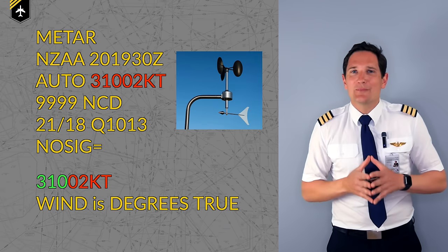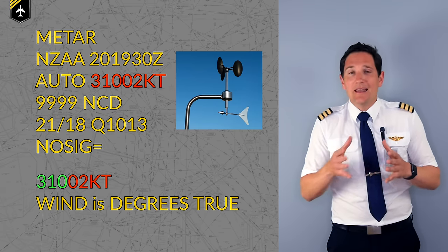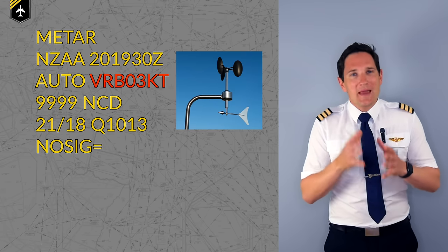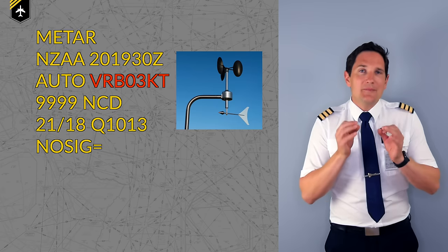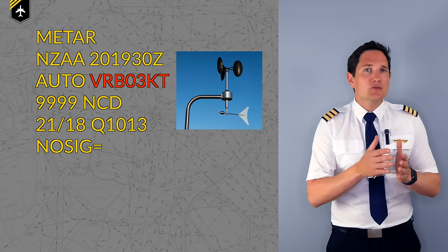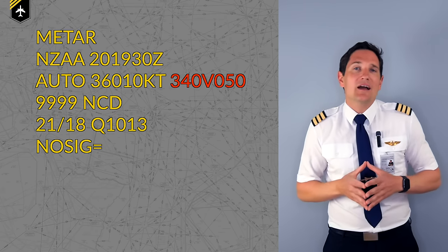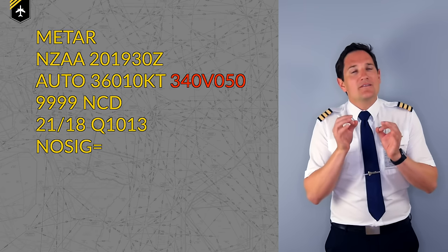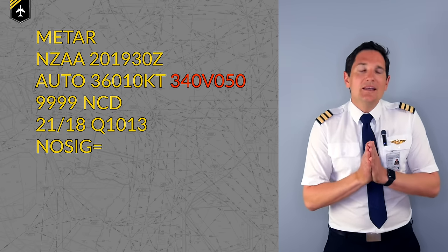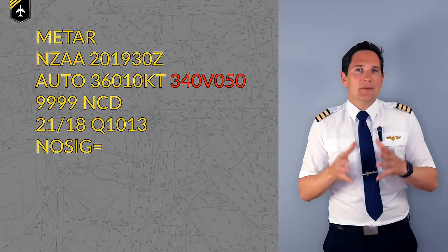I cannot stress the importance of this because many students fail their flight tests for forgetting to convert the wind in METARs and TAFs. So do not forget that. You may also see the letters VRB meaning variable wind direction, which is often associated with light winds of 2 to 5 knots. A single letter V between two directions such as 340 and 050 means the wind is varying between those degrees. This is used when wind is varying at significant speeds, which can make it hazardous for pilots coming in for landing.